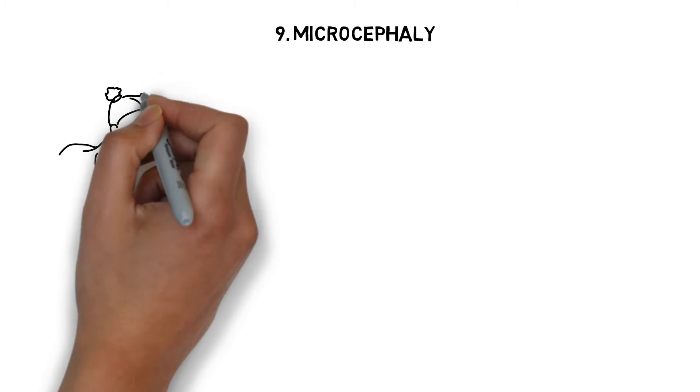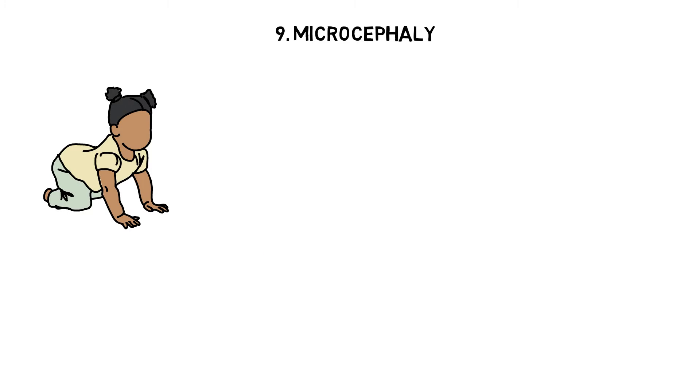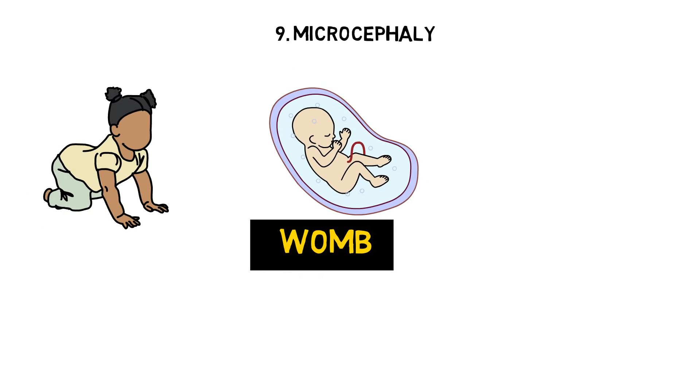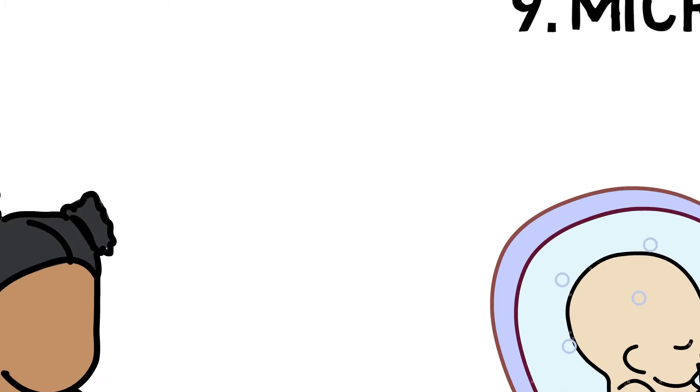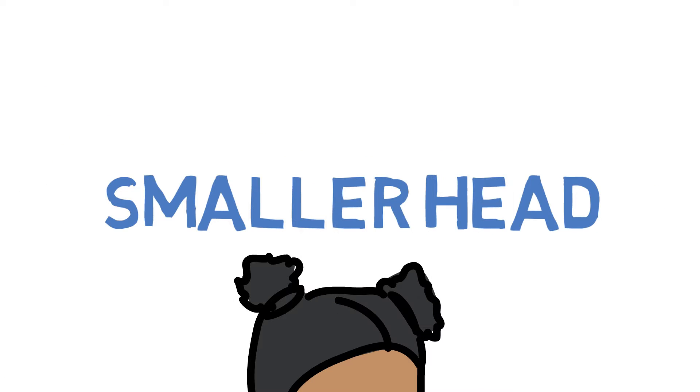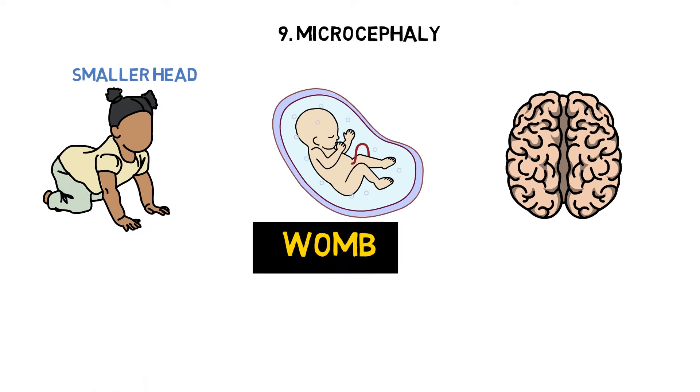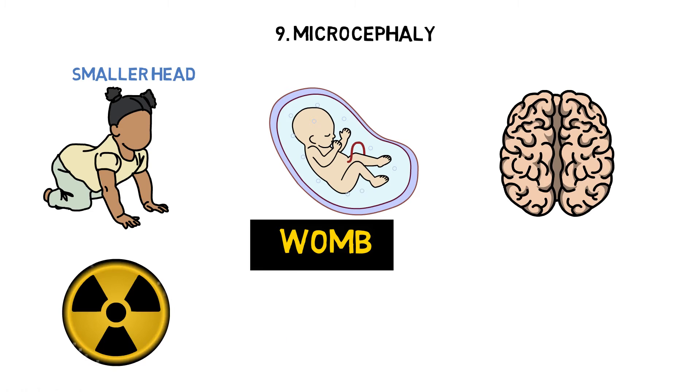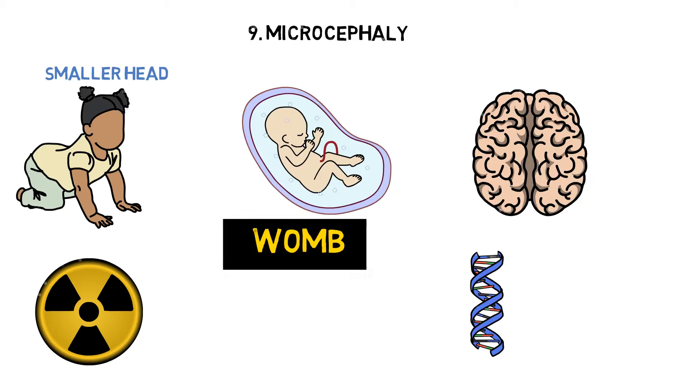Number 9: Microcephaly. Microcephaly is another rare condition that's seen immediately at birth and is sometimes detected even earlier. What happens is that, while in the womb, the baby's brain does not develop properly, causing the head to be much smaller than a normal baby's head at birth. Many believe the disease is caused by exposure to hazardous substances while the baby is developing, such as radiation or genetic problems.